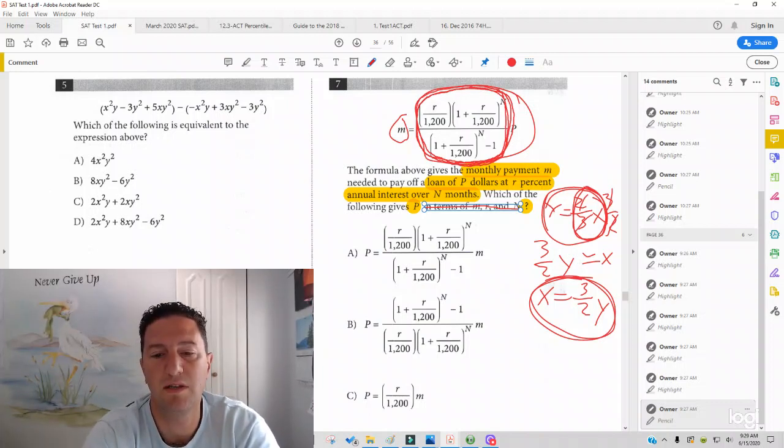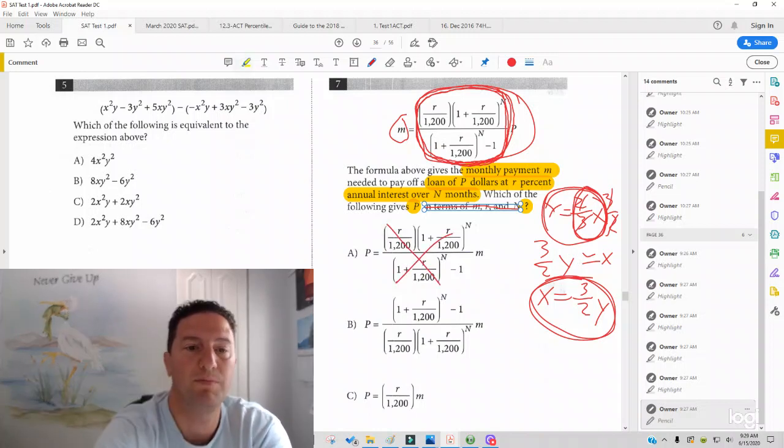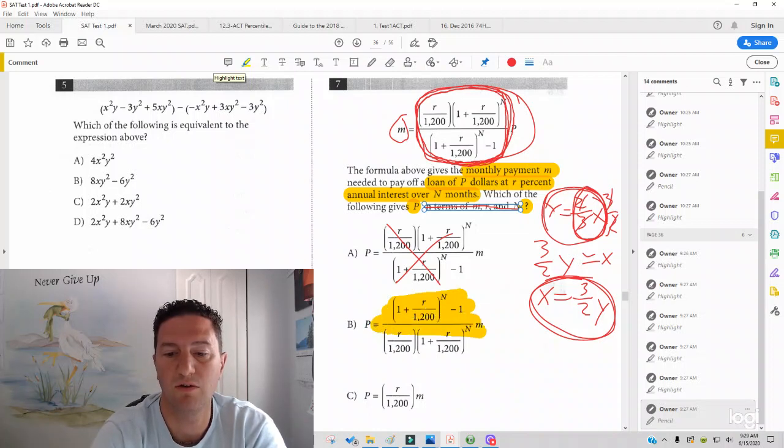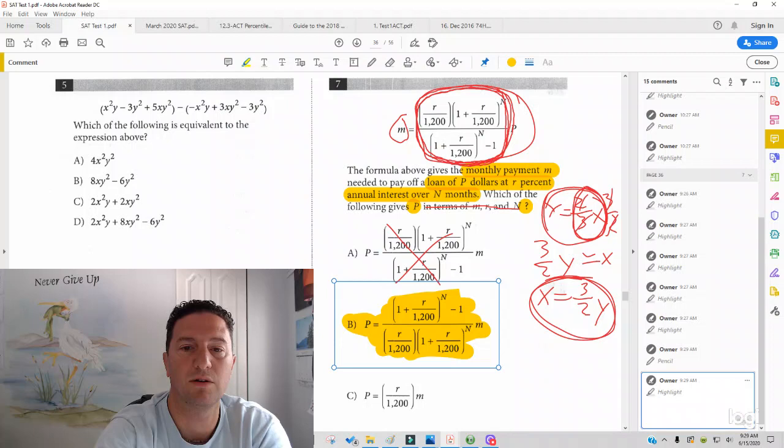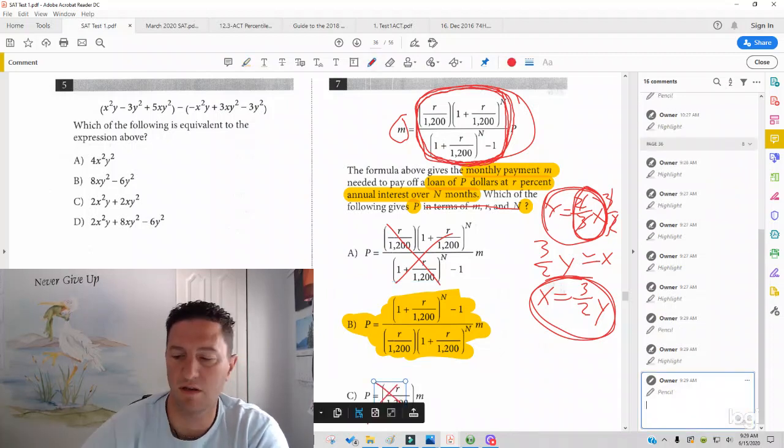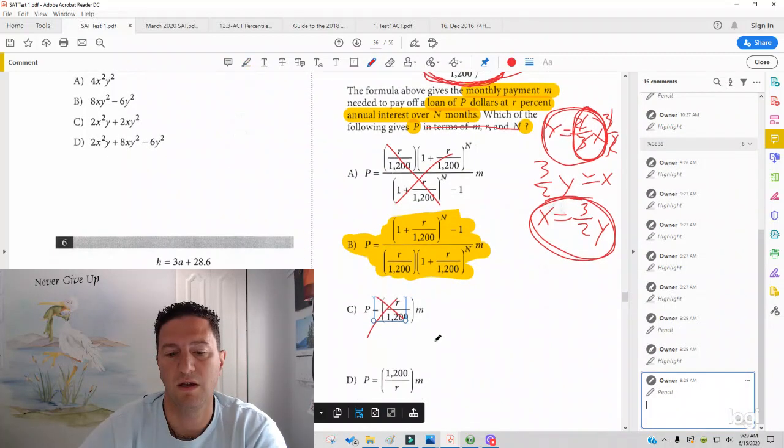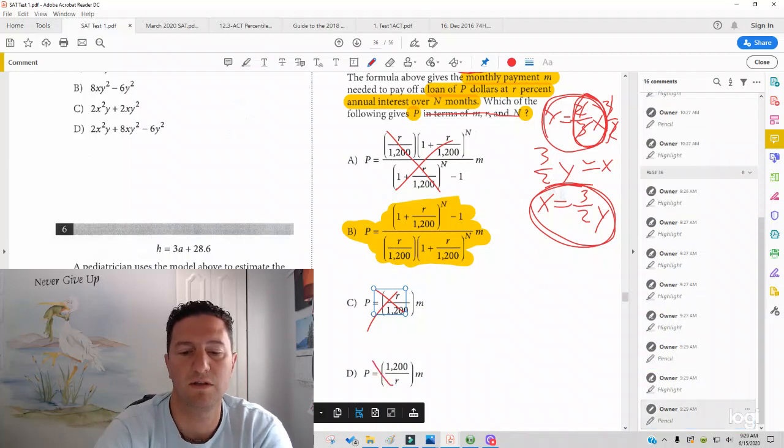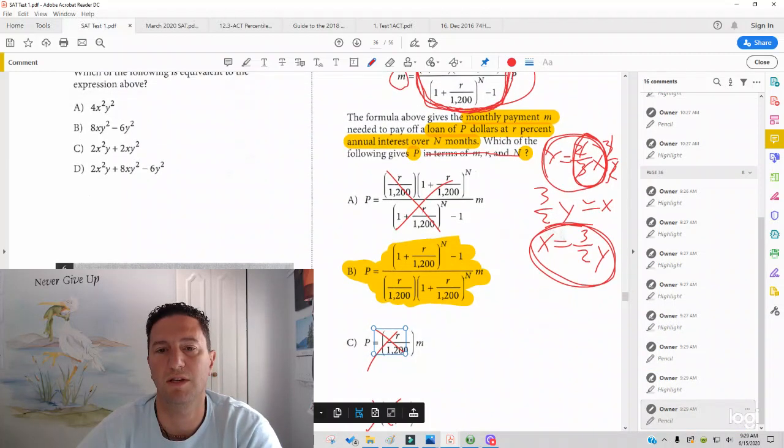So where do we see the reciprocal? Answer choice A, we see the same problem. So that's gone. Answer choice B, we do see the giant reciprocal. And so that's going to be our answer. And then you see you don't see this giant reciprocal in C, and this problem is so big you can't even see answer choice D, but that's not the giant reciprocal either.